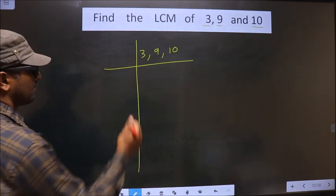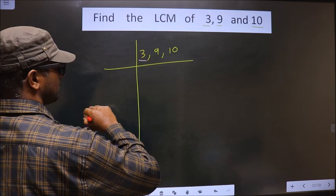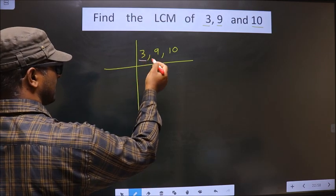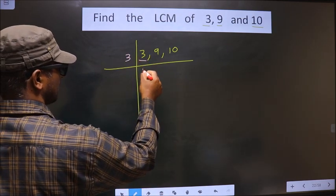Next. The first number you have is 3. 3 is a prime number. So we take 3 here. 3 goes into 3.